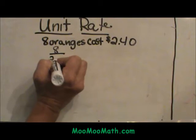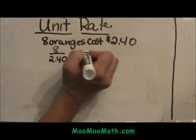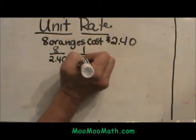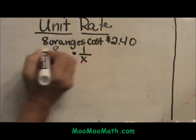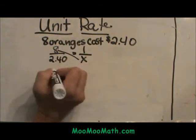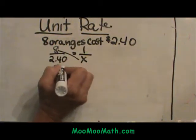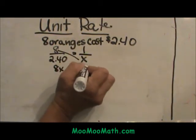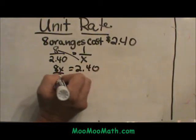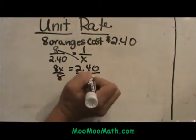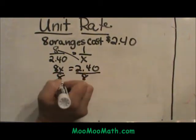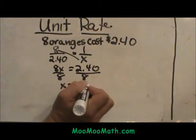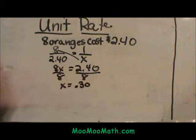8 is to $2.40 as 1 is to x, and we solve this with a cross product. 8x equals 2.40. Divide both sides by 8, so x is 0.30, or 30 cents.